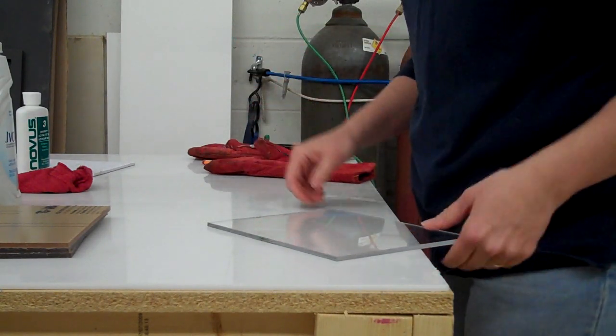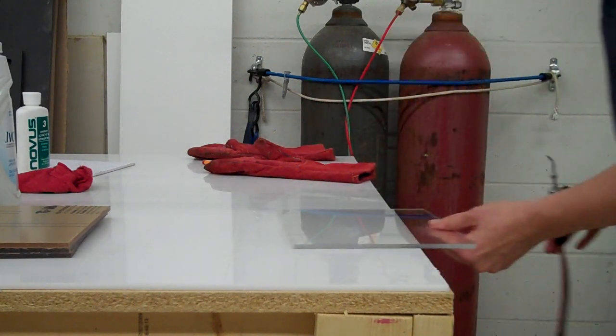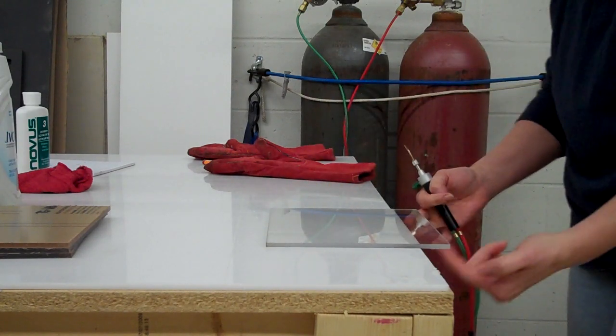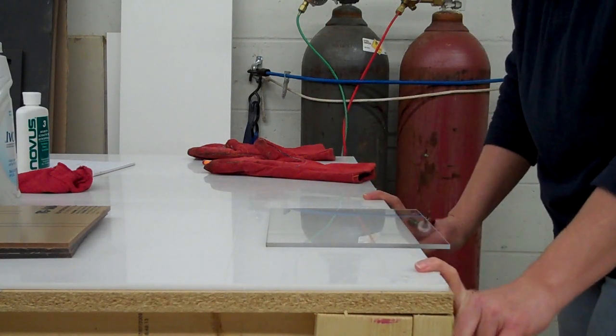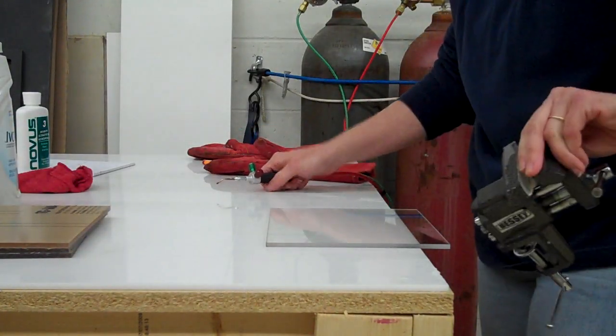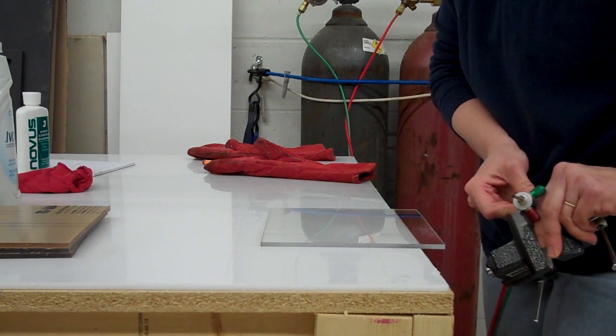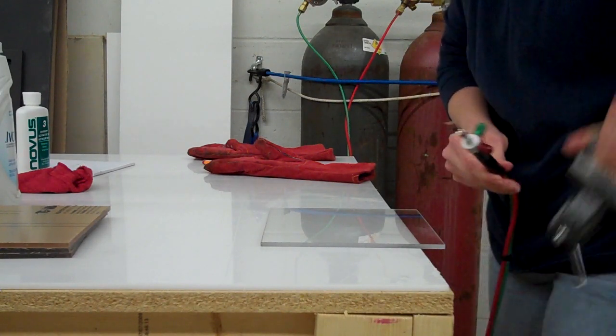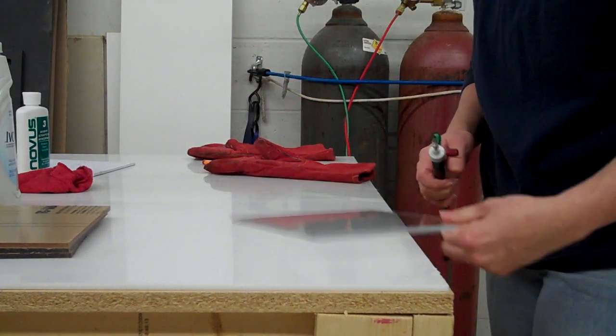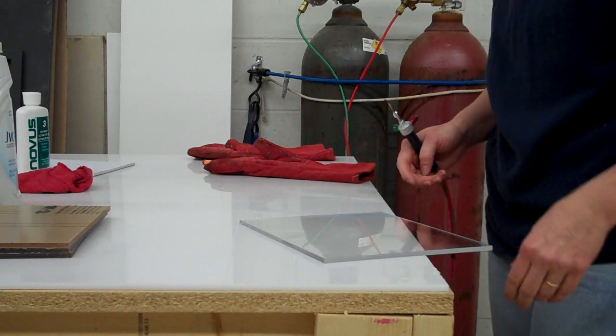Now if by chance we had, say, a 30 by 40 piece of plexi, I would hang it off the edge of my table and just flame polish off the table, being aware where the flame is. You don't want to ignite your table. Some people will take a little vise and either set the torch in the vise so they can move the plexi into that torch area, or vice versa, put the plexi in the vise and torch it that way.